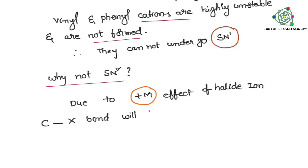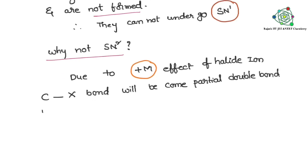CX, CX bond will become what? Partially double bond. So CX, how many bonds are there between that? Only single bond. But due to the plus M effect of halide ion, that is becoming what? Single bond partially becoming double bond. Then system repulse the nucleophile.